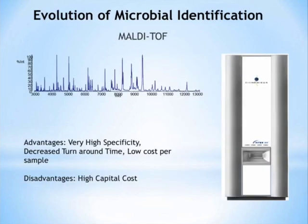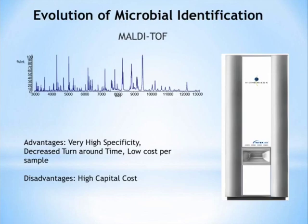Finally, MALDI-TOF. Up to this point we've been doing comparison sets — biochemical or sequencing data compared to a library. MALDI-TOF does the same but uses protein spectra. The advantages: very high specificity rivaling nucleic acid analysis, decreased turnaround time compared to sequencing or biochemical results, and low cost due to low reagent requirements. The disadvantage is a high upfront capital cost, though a justification for return on investment can readily be made.